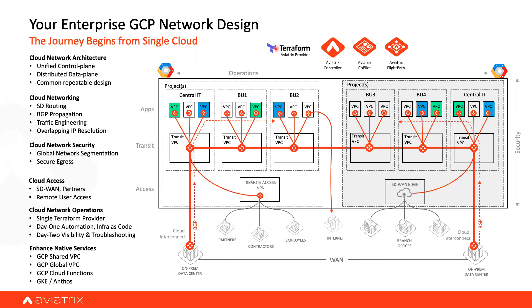Terraform and the controller provide visibility and automation. For more advanced needs, CoPilot adds multi-cloud operational visibility. Cloud-native services in GCP — shared VPC, global VPC, serverless cloud functions, GKE — are all understood by the platform. The architecture provides a solution with the cloud networking approach across all these constructs.